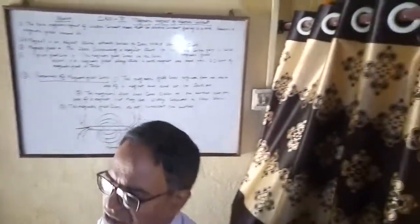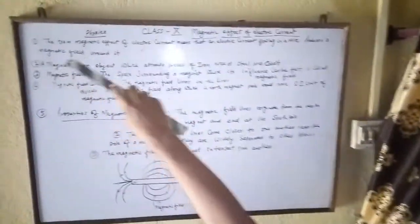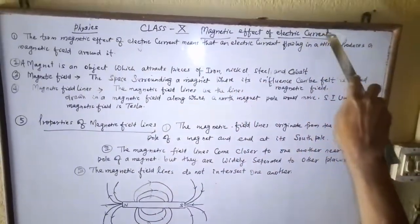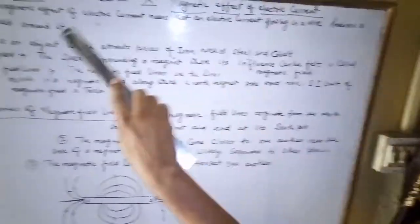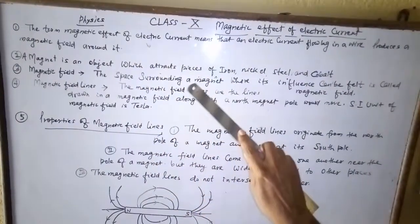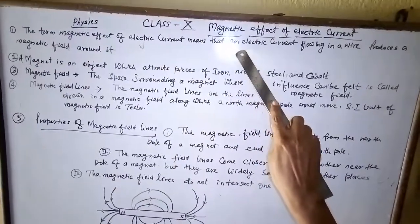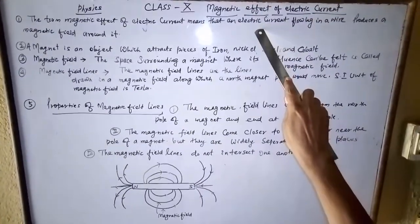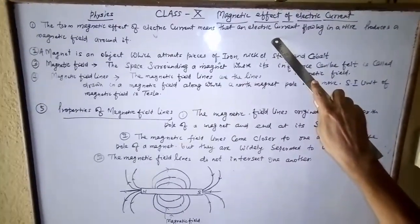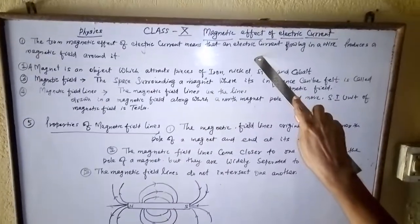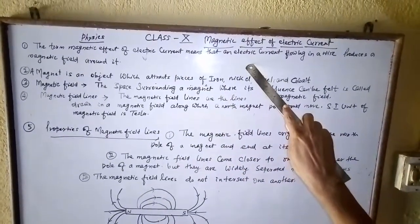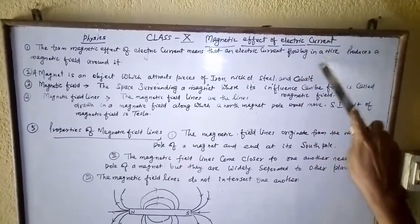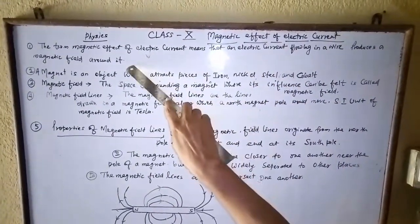Look at the whiteboard. The first term is magnetic effect of electric current. The term magnetic effect of electric current means that an electric current flowing in a wire produces a magnetic field around it. Suppose you have taken a wire and you pass electric current through it — after some time, a magnetic effect is produced in the wire. This process is called magnetic effect of electric current.